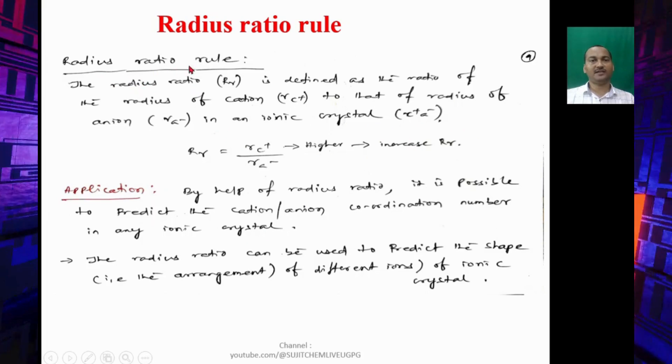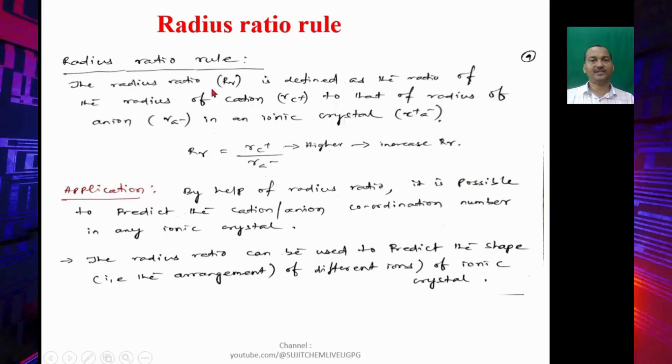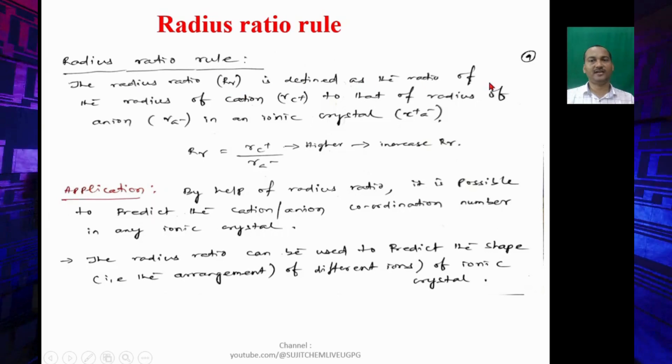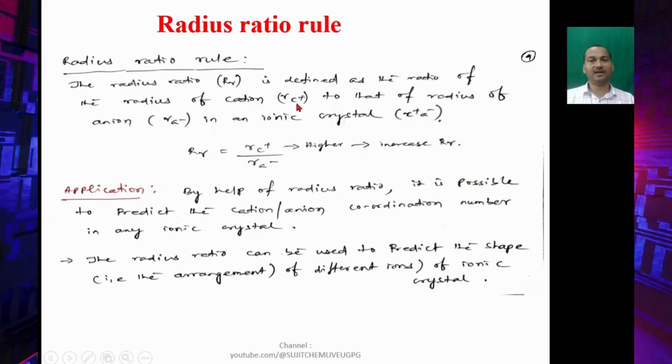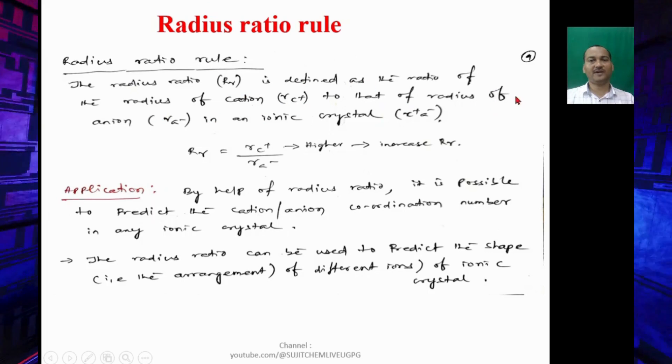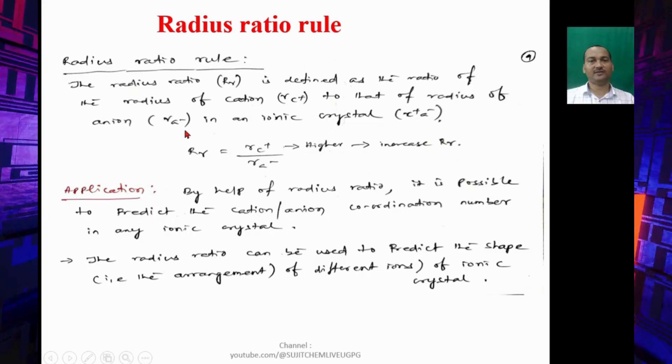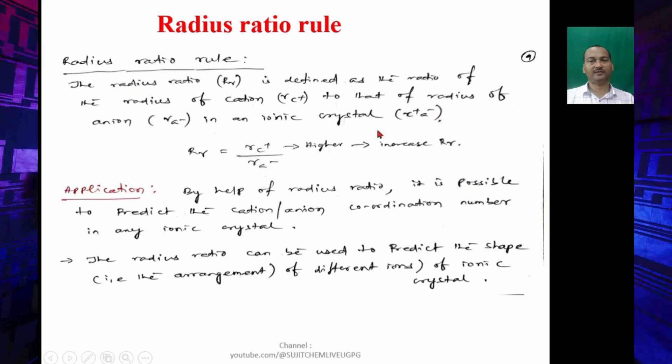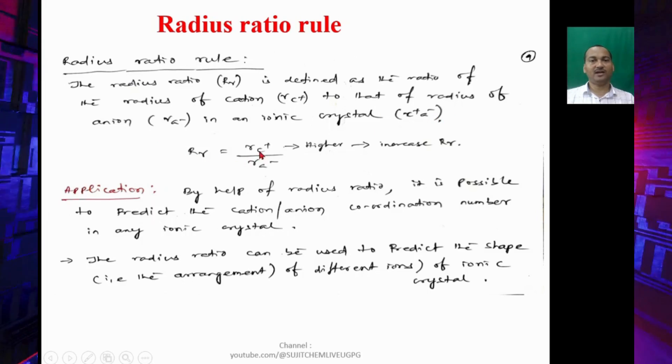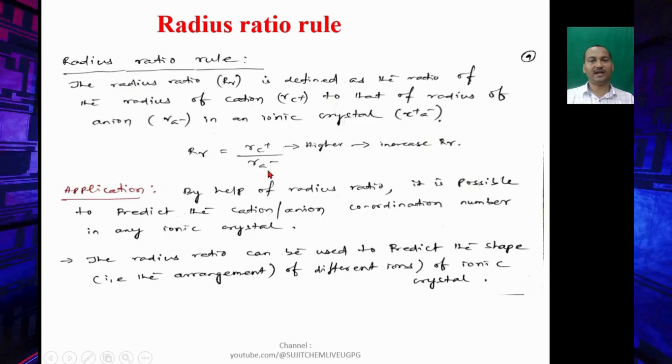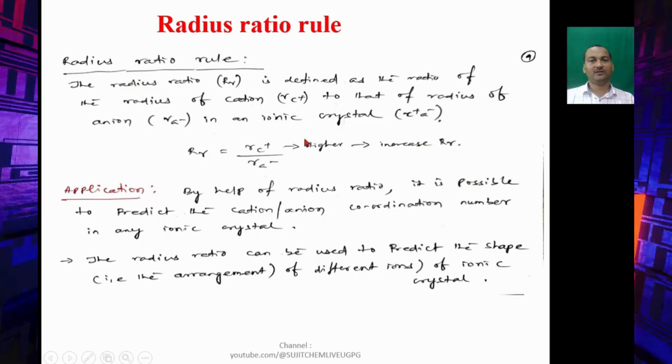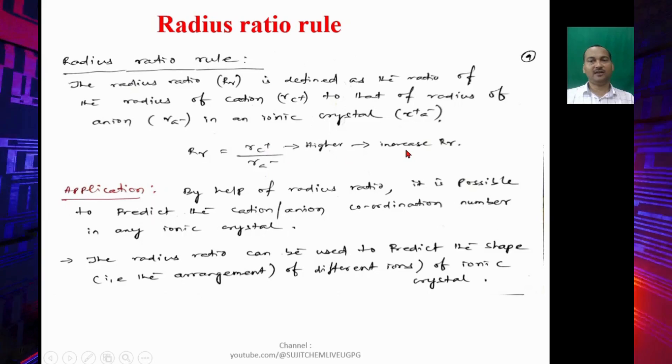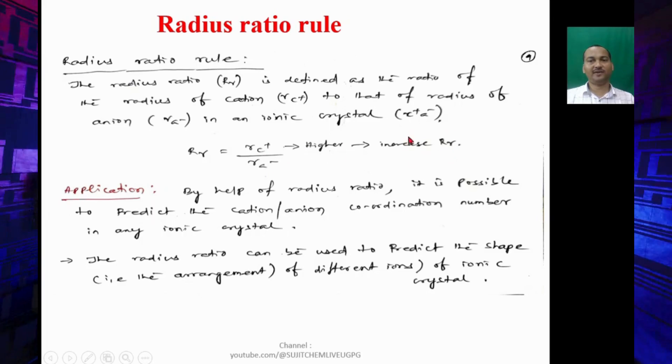What is radius ratio rule? The radius ratio (RR) is defined as the ratio of radius of cation (RC+) to that of radius of anion (RA-) in an ionic crystal C+A-. So RR = RC+/RA-. If RC+ is higher, there will be a higher value of RR.